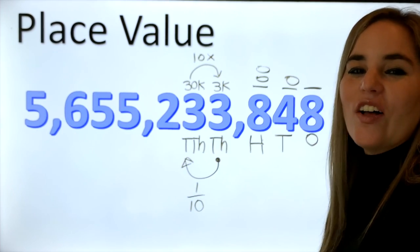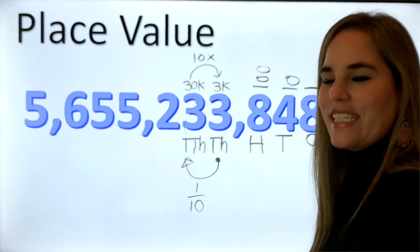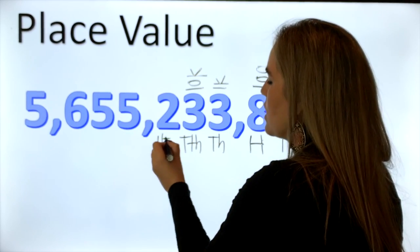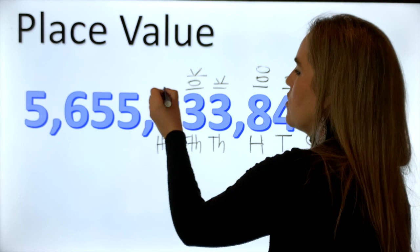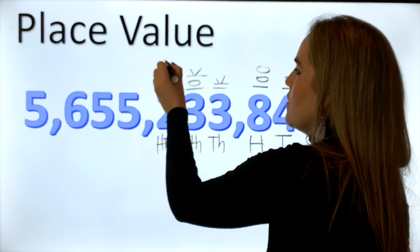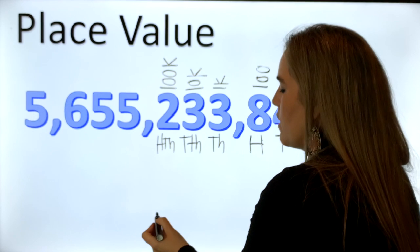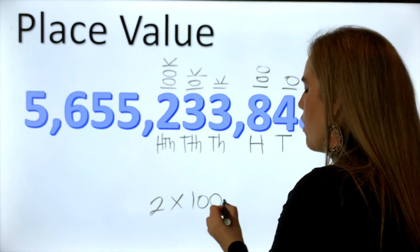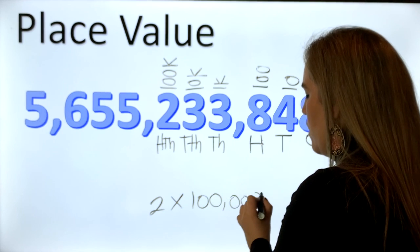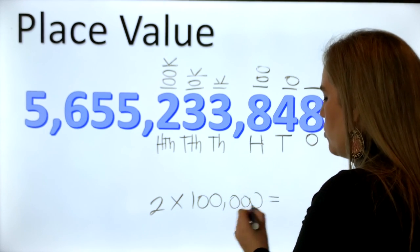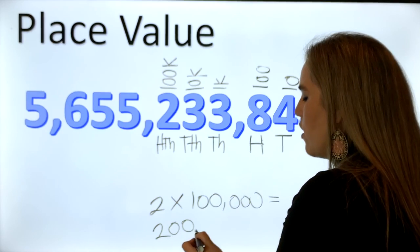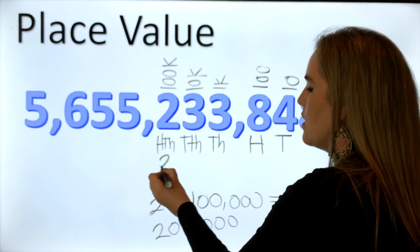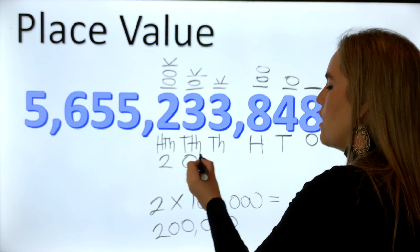Now let's move on to the hundred thousands place. This two is in the hundred thousands place, which means we have two groups of one hundred thousand, which equals two hundred thousand. You drop the digit and fill the rest with zeros — two hundred thousand.